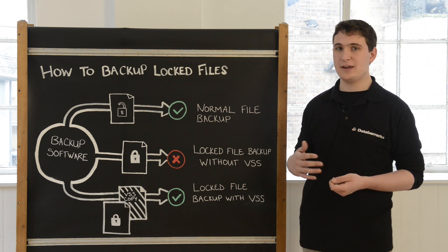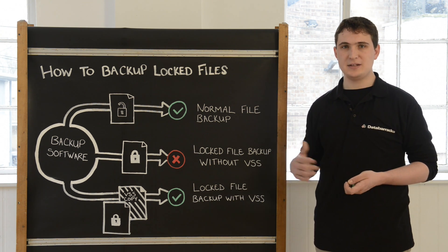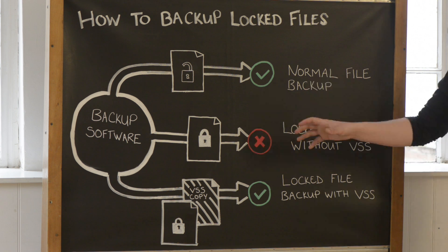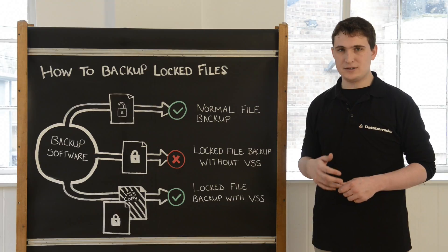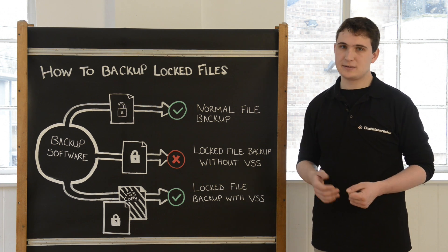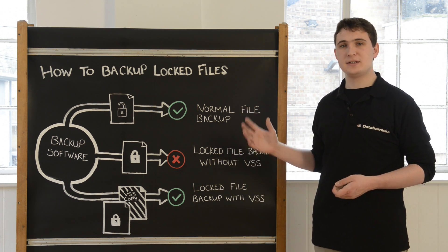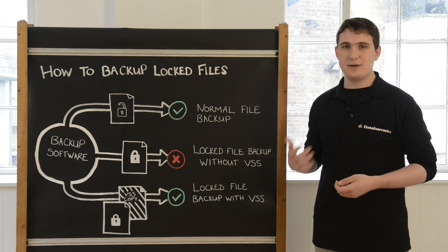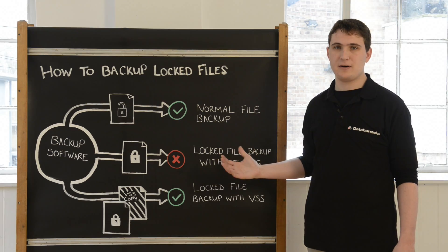This is because the user is either editing or modifying that file, and that can only be done by one person at a time. Typically, backup software will scan the network for files that have been modified in order to back them up, say on a nightly basis. When the backup software finds a file that has been modified it will try to back it up. However, if the file is locked or is still held open by an application, it will fail to back up that file.